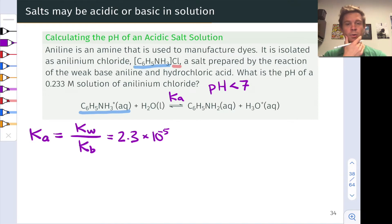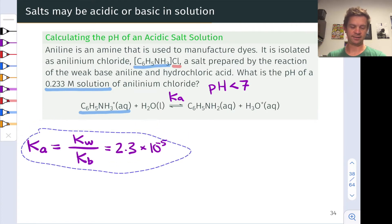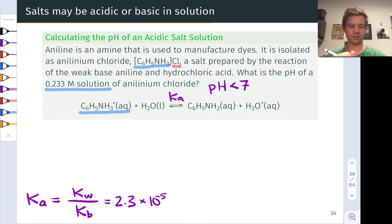Where are we going from here? Well, now we can look at the concentration information that's built in the problem. We've got a 0.233 molar solution of anilinium chloride. And so we can now start thinking about an ice table type situation. And I'm actually going to build out our ice table just underneath the reaction here.